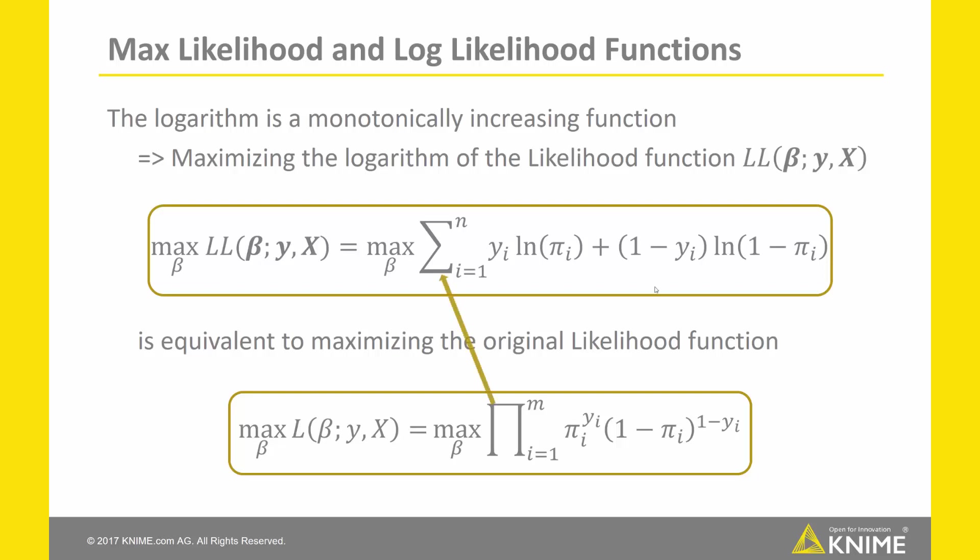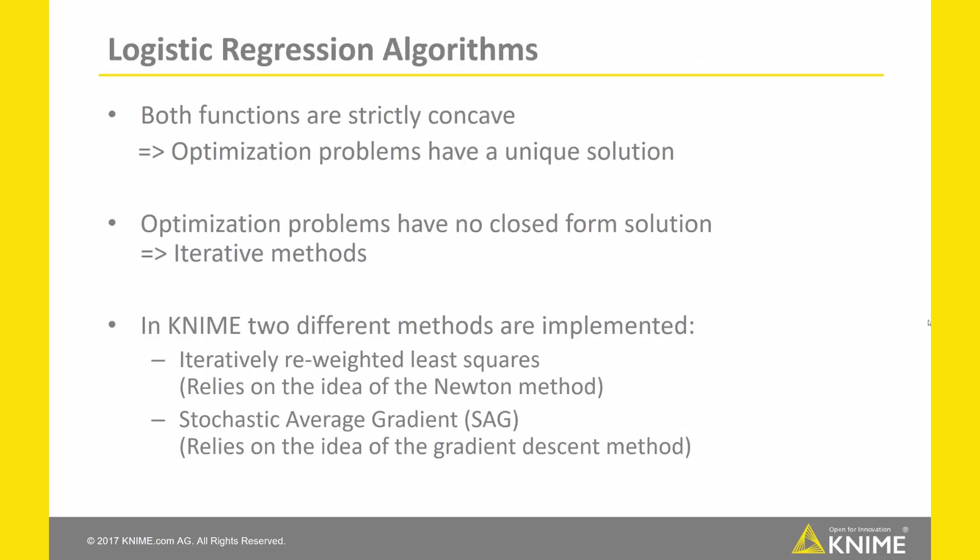Taking the logarithm has the advantage that it transforms the product into a sum, which is easier to handle. This new function is called the log-likelihood function, denoted double capital L for short. It can be proven that the likelihood function as well as the log-likelihood function are strictly concave. As a result, this optimization problem has a solution and that solution is unique. However, this optimization problem has no closed-form solution, so we need to use iterative methods to train our logistic regression model.